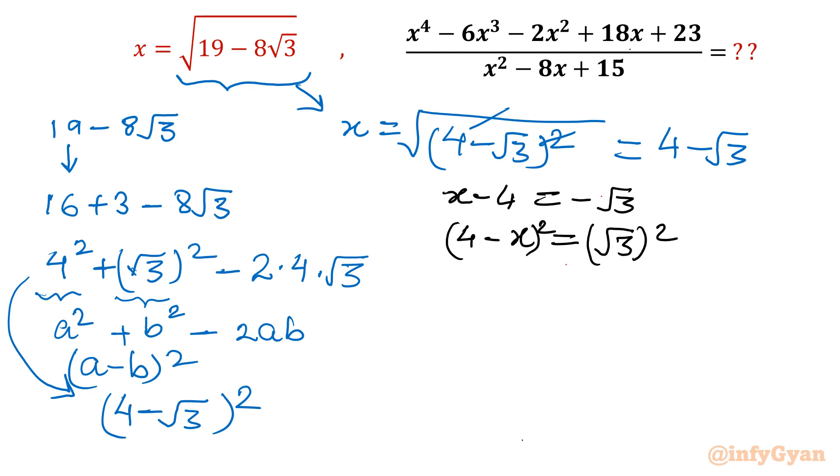So (a - b)^2: (√3)^2. So 4^2 + x^2 - 8x = 3. So it is 16. So let me write that quadratic equation: x^2 - 8x, 16 - 3, 13 = 0.